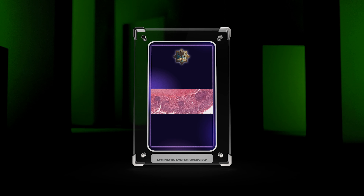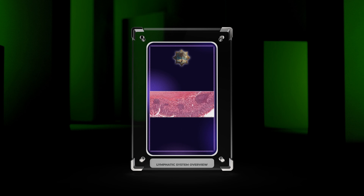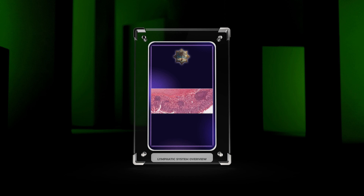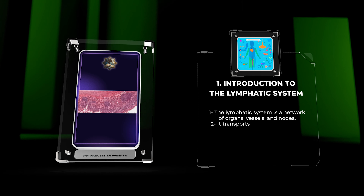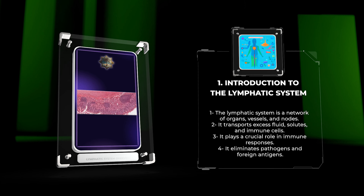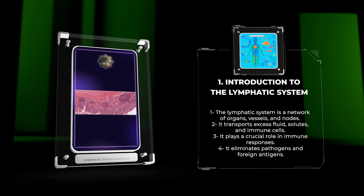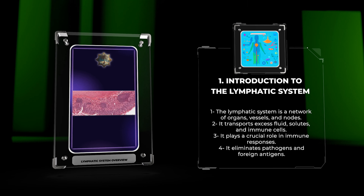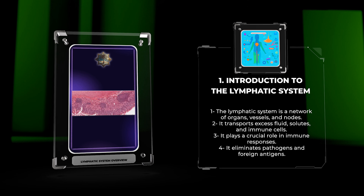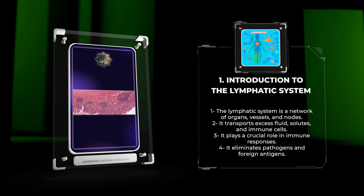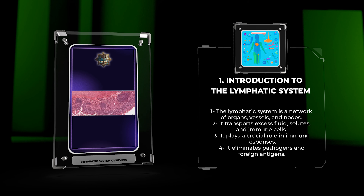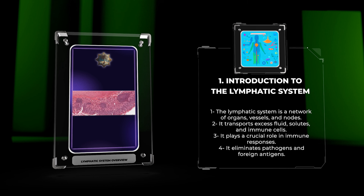The lymphatic system is a network of organs, vessels, and nodes that work alongside the cardiovascular system. It transports excess fluid, solutes, and immune cells from tissues to the bloodstream, playing a crucial role in immune responses such as eliminating pathogens and foreign antigens.